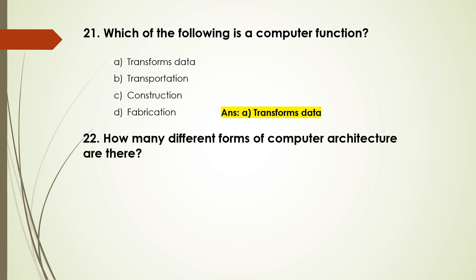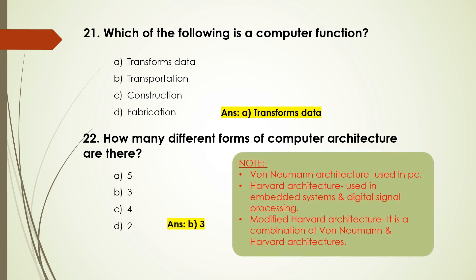Question number 22: How many different forms of computer architecture are there? Options are: 5, 3, 4, 2. The answer is B, 3. The three forms of computer architectures are Von Neumann architecture, Harvard architecture, and Modified Harvard architecture.